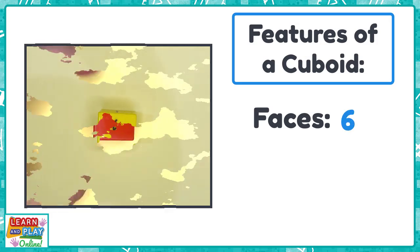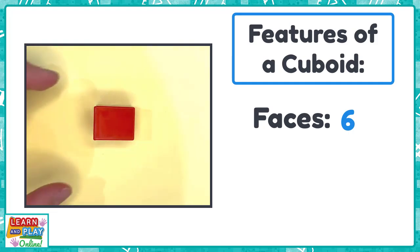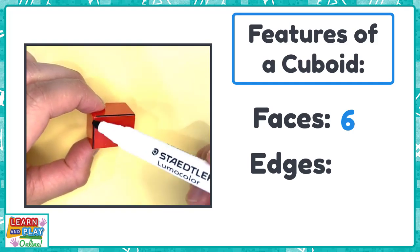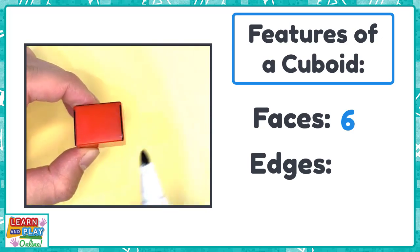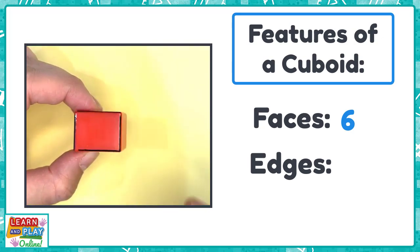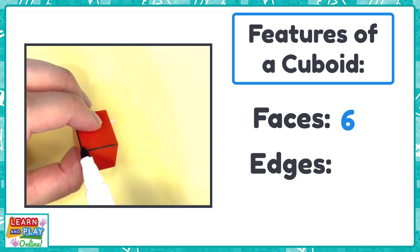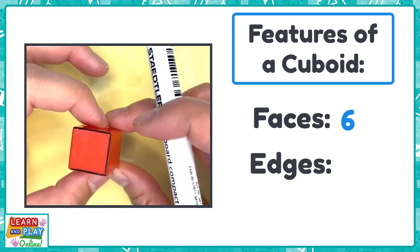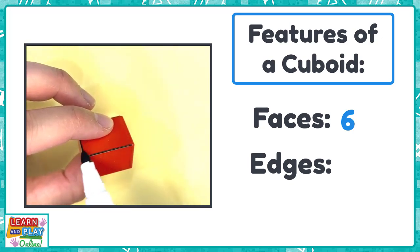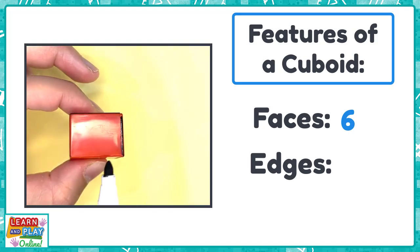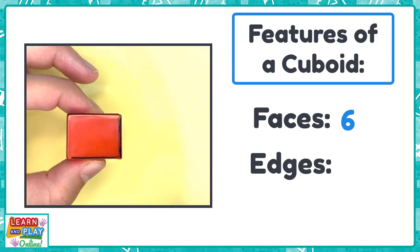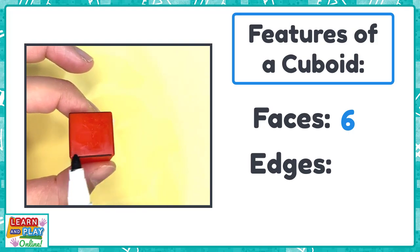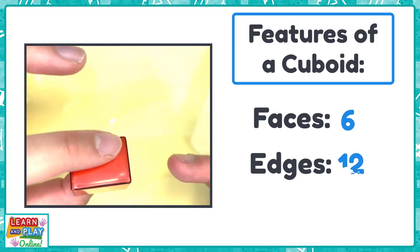The next feature we are going to count on a cuboid are the edges. 1, 2, 3, 4, 5, 6, 7, 8, 9, 10, 11, and 12. A cuboid has 12 edges.